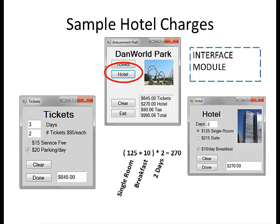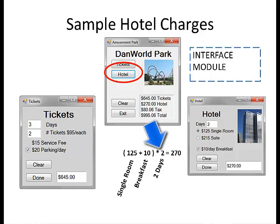How does hotel work? For the hotel I have a single room and breakfast — that's $125 plus $10, so that's $135 multiplied by 2 because I'm staying for two days. The $270 is stored in the interface module, which can be read by the main program when it's time to update the summary of all the charges.